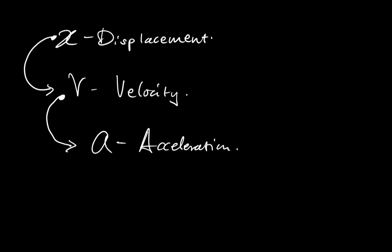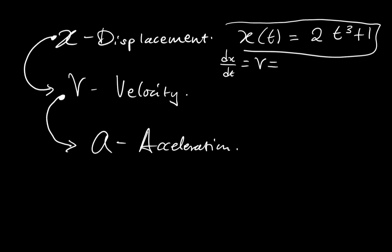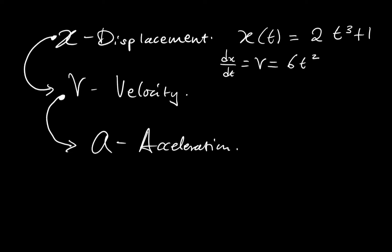For instance, if you have a displacement function with respect to time given as x = 2t³ + 1, and you differentiate this with respect to time — that is, dx/dt, the change in displacement over a period of time — you get the velocity function. Differentiating using the power rule gives v = 6t².